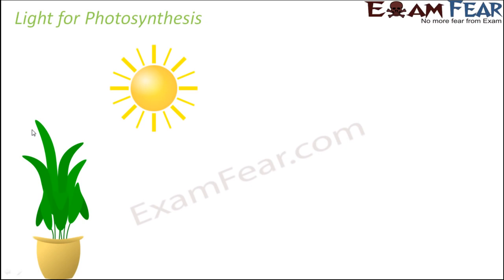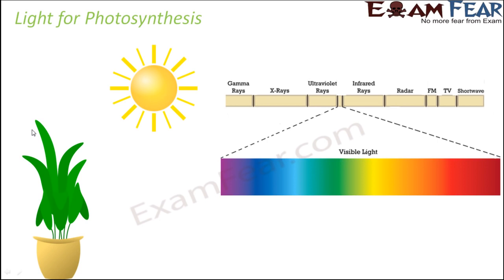Let us try to understand the significance of light for photosynthesis, because here we are talking about absorbing light. When we say sunlight is important for photosynthesis, not every type of light coming from the sun is important — only a particular section is involved. Sunlight itself is the electromagnetic spectrum, which has gamma rays, X-rays, ultraviolet rays, infrared rays, radar, FM, TV, shortwave — so many types of waves depending upon their wavelengths.